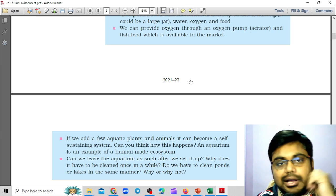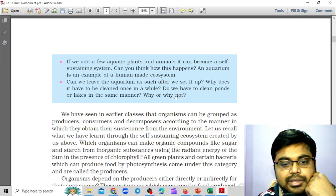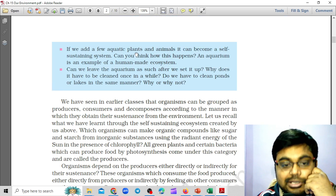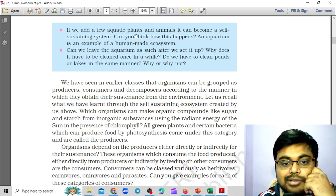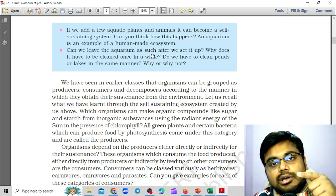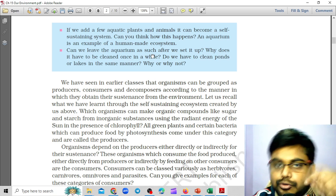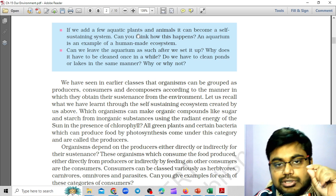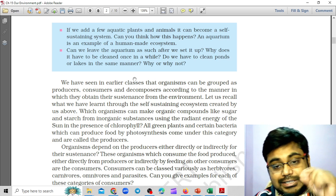For oxygen, we use oxygen pumps. But to make it self-sustaining, what do we need to do? We also need plants. Plants are also required. So basically we require producers also. Otherwise, we have to keep on giving food from outside. So we require plants, we require producers also in the self-sustaining system.